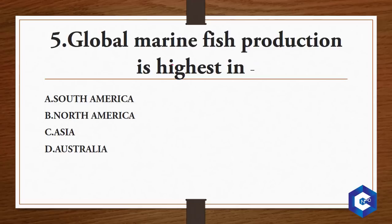Global marine fish production is highest in which of the following? Option A is South America, option B is North America, option C is Asia, and option D is Australia. The answer to this question will be Asia — global marine fish production is highest in Asia.